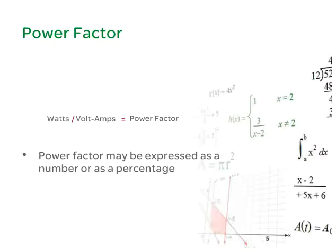A UPS with a power factor of 0.8 is more efficient than a UPS with a power factor of 0.7.